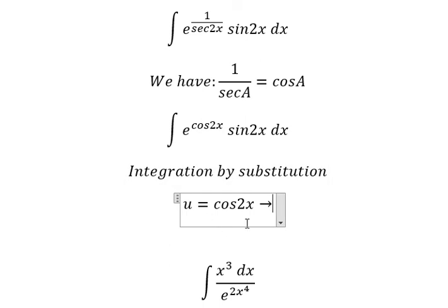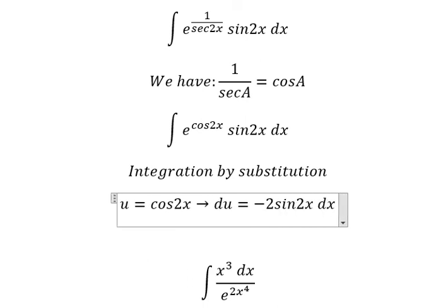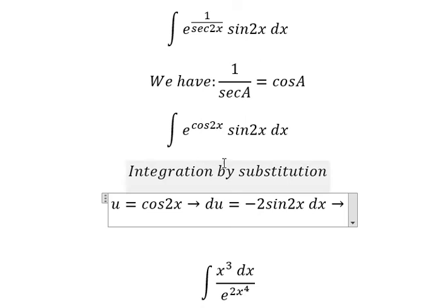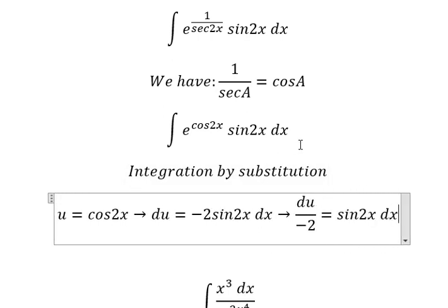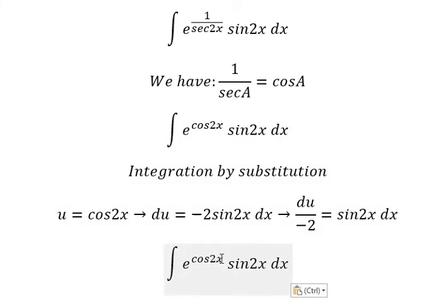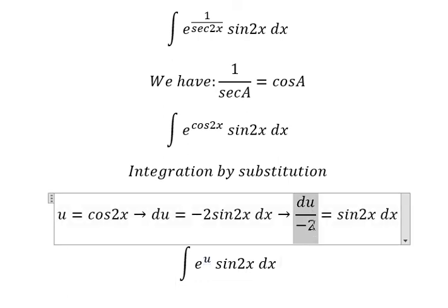Then we do the first derivative for both sides, so you get du equals negative 2 sine 2x dx. Because we don't have negative 2, we need to divide both sides by negative 2. So this one we change by u, and sine 2x dx we change by this one.